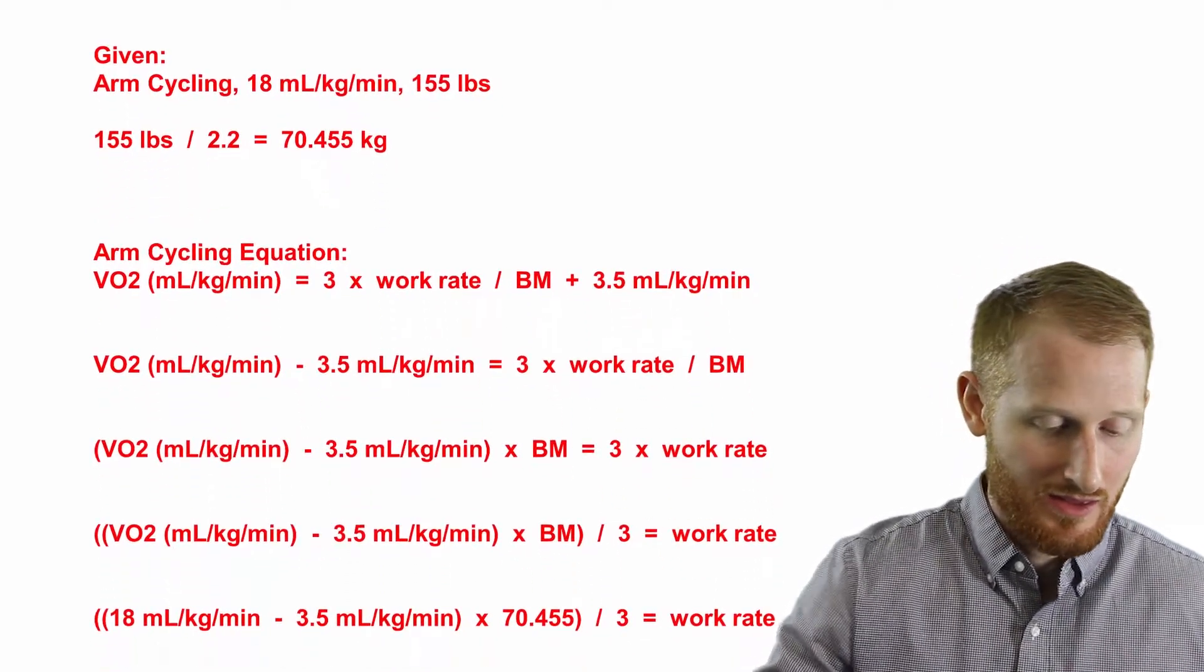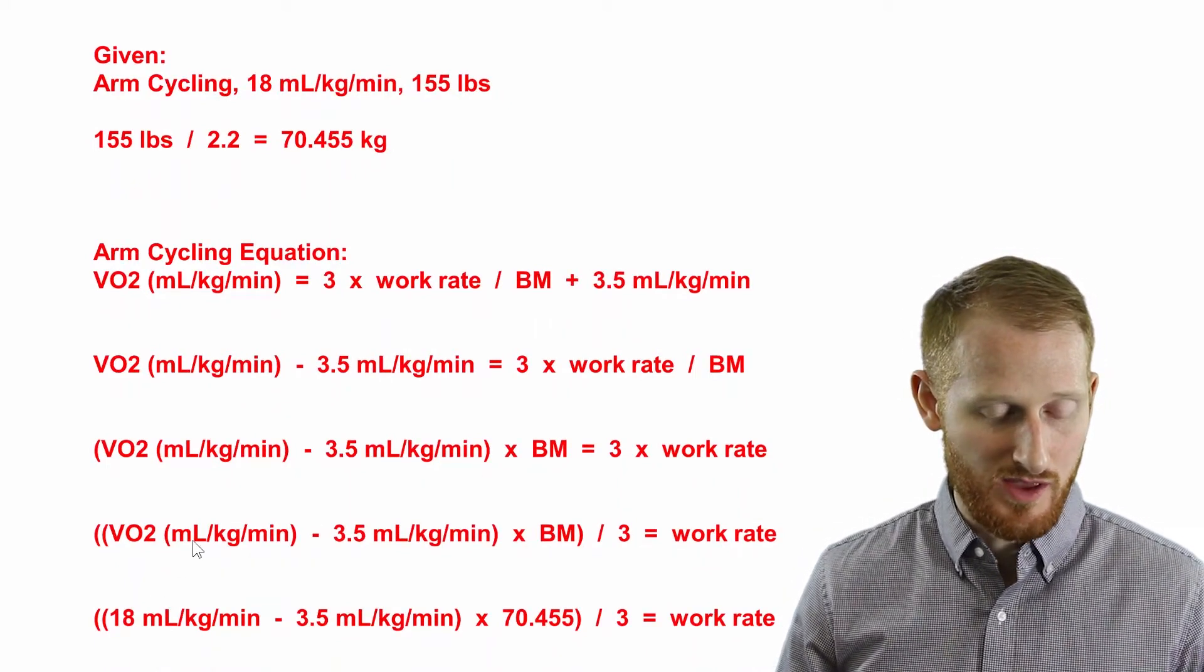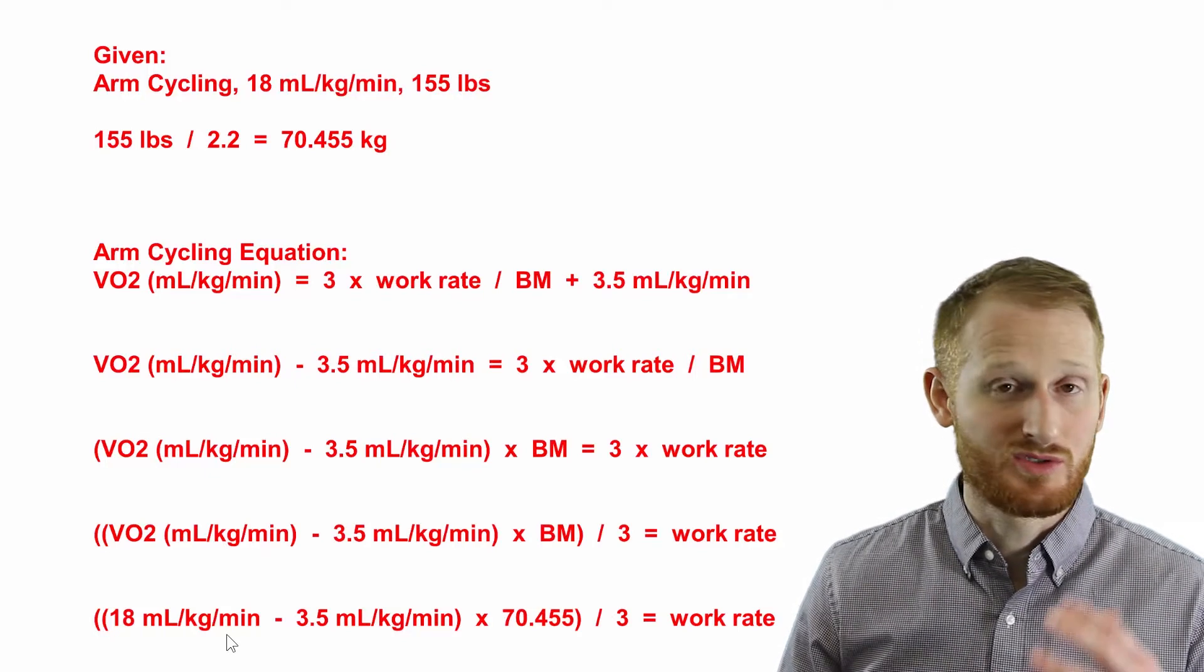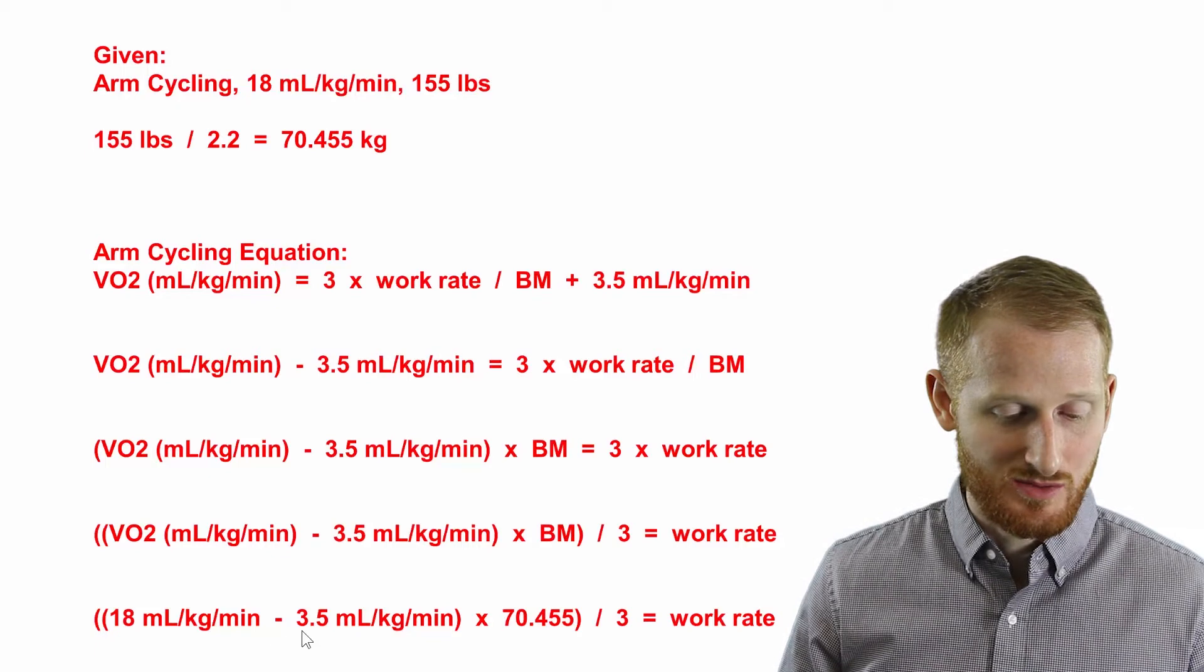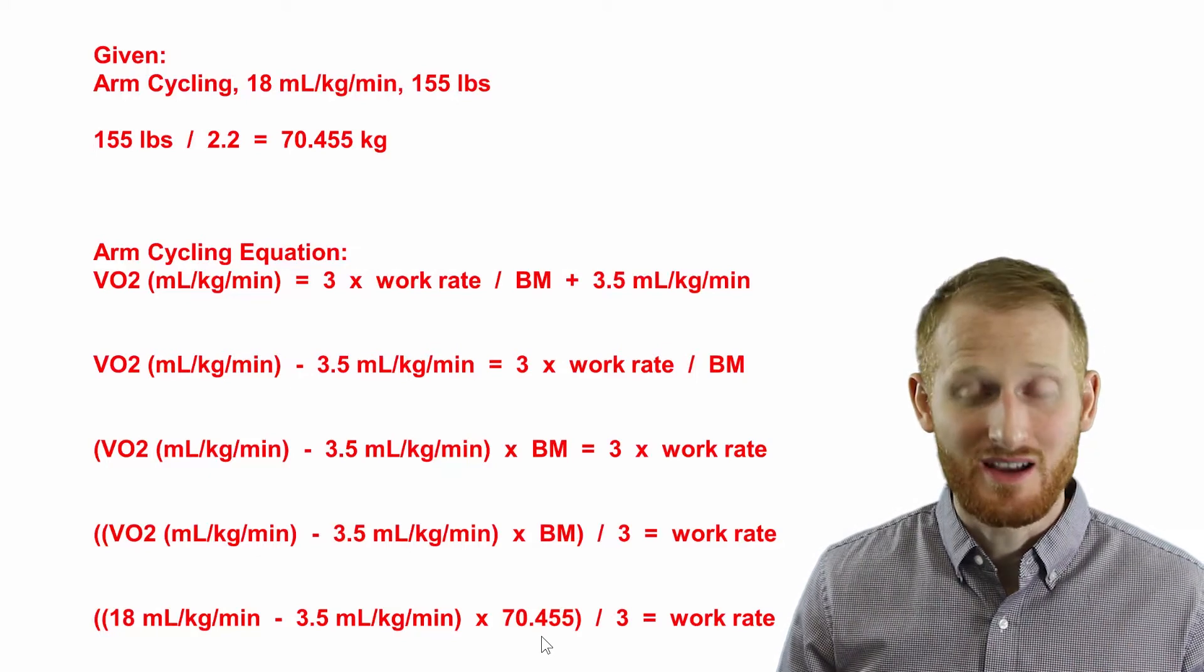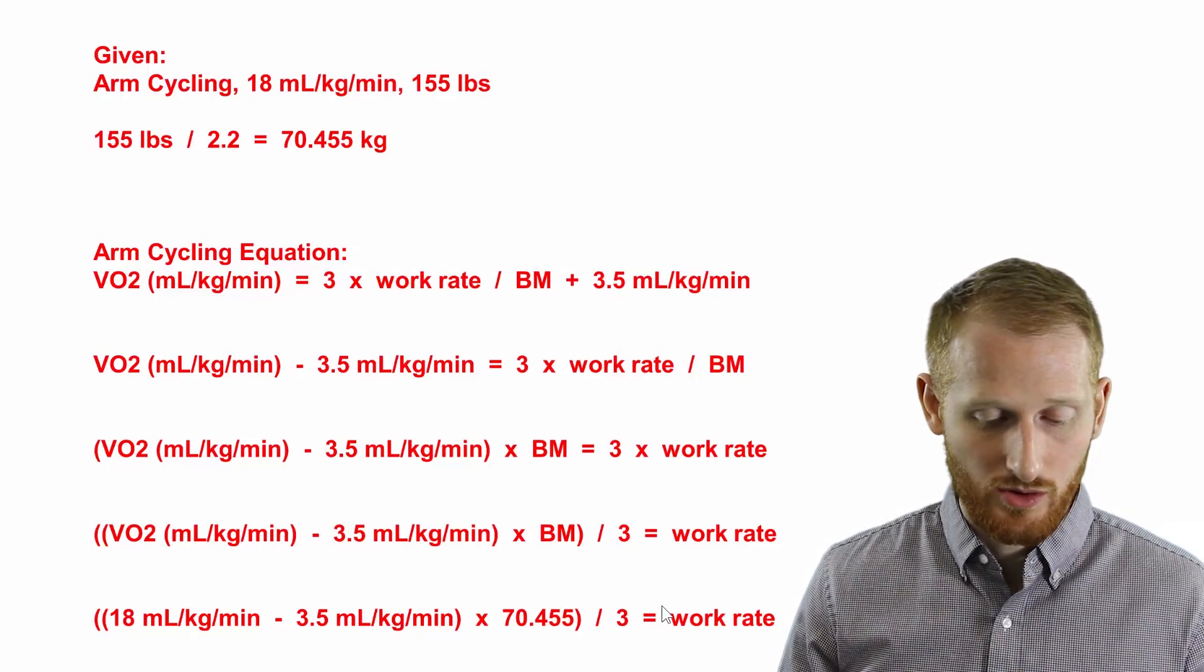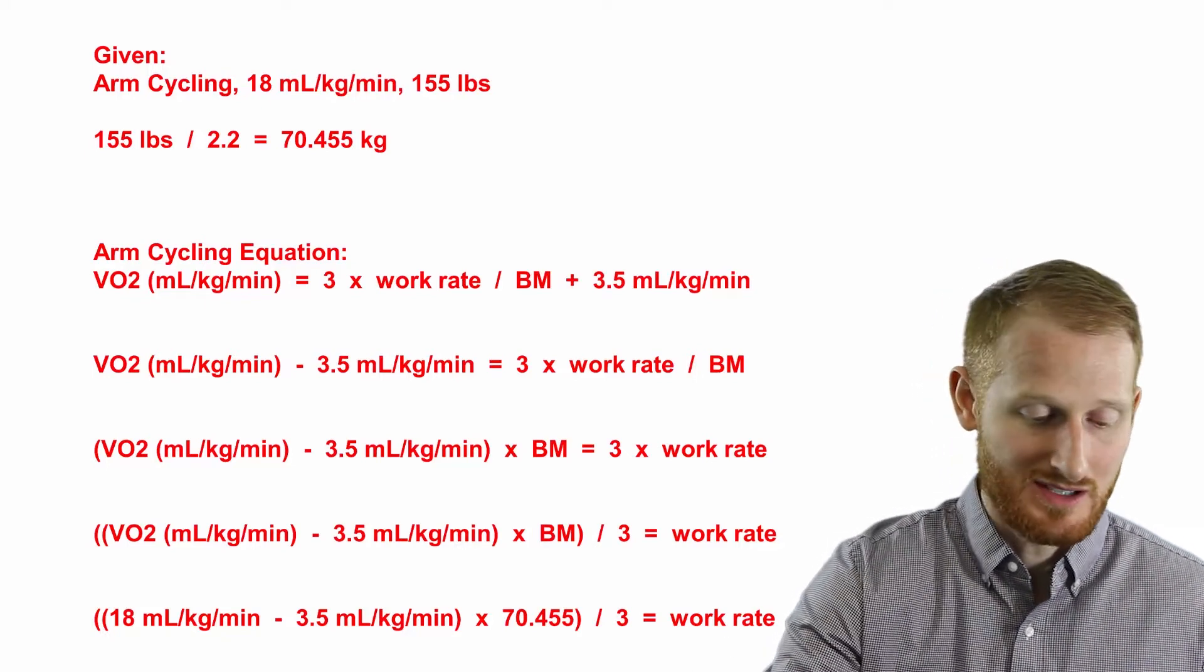So plugging in our numbers in this equation, we have the VO2 of 18 mLs per kg per minute, which was given to us in the question. And we subtract from that the 3.5 and multiply the 70.455, which is his body mass in kilograms, and divide by 3. This whole thing will eventually give us work rate. But again, let's take this one step at a time.